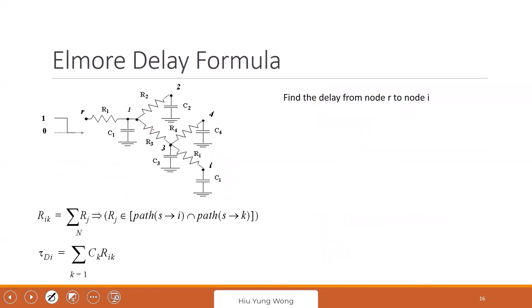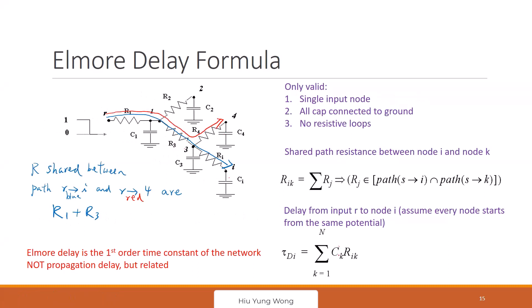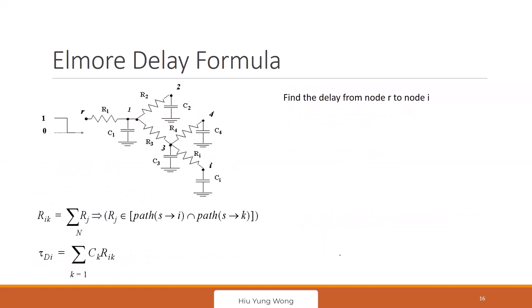The formula is: τ = Σ C_i × R_shared. Write down all the capacitors: C1, C2, C3, C4, and Ci — do not forget yourself, your own burden, not just other people affecting you. Ci itself affects the delay. What is the shared resistance between path r-to-C1 and r-to-Ci? Only R1. How about C2? Also only R1 — R2 is not shared.